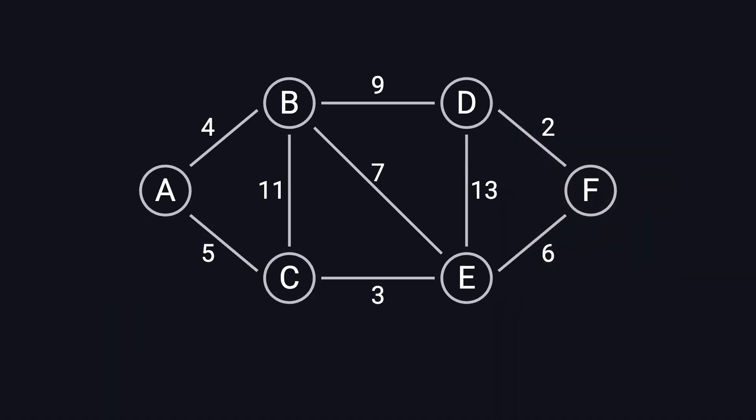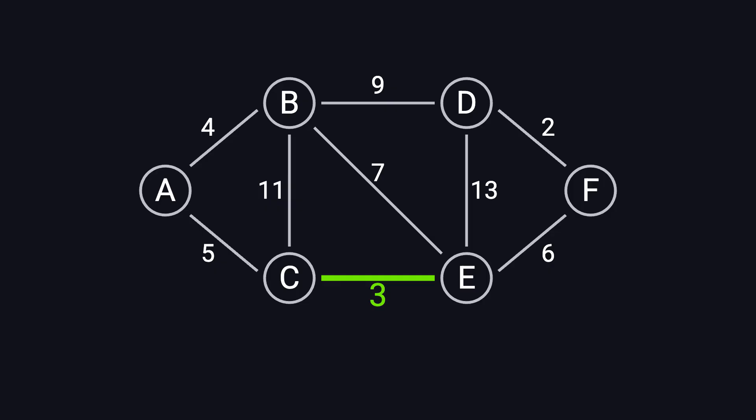Let's break it down with a visual example. On the screen, you see a weighted graph with six nodes: A, B, C, D, E, and F. Each edge represents a connection between two nodes, with a number indicating the distance. For example, the distance from A to B is 4, and from C to E is 3. Our goal is to find the shortest path from A to F using Dijkstra's algorithm.